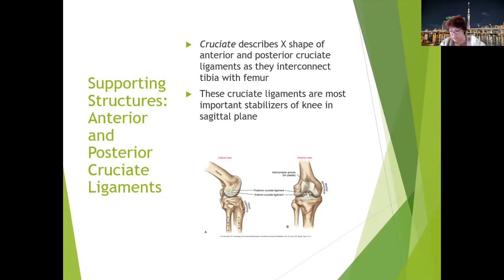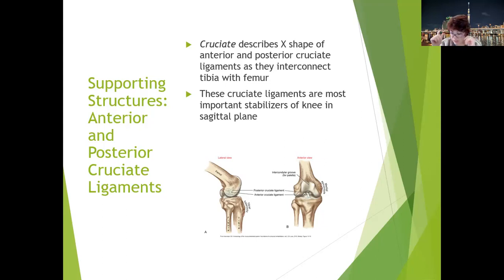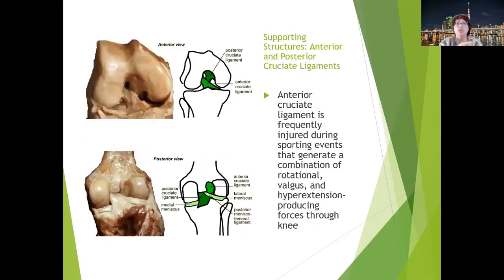In closed chain, the PCL resists anterior translation of the femur on a relatively fixed tibia. There is a nice box on page 283 that describes the open-chain and closed-chain motions resisted by the anterior and posterior cruciate ligaments. The ACL is frequently injured during sporting events that generate a combination of rotational valgus and hyperextension-producing forces through the knee.